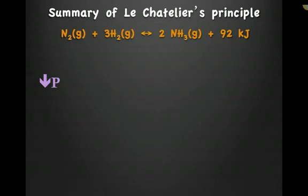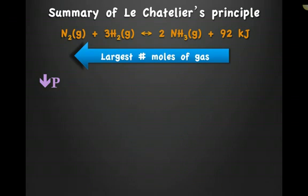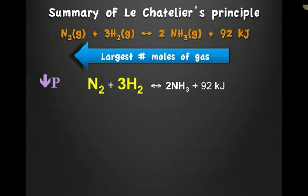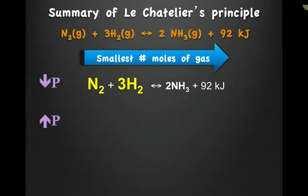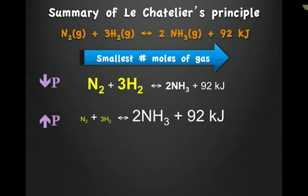In this next example, let's look at what happens when I decrease the pressure. Remember, a decrease in pressure favors the formation of the largest number of moles of gas. That means this equilibrium is going to shift to the left — there are four moles of gas on the left and only two moles of gas on the right. This equilibrium shifts to the left, increasing the amount of nitrogen and hydrogen. What happens if I increase the pressure? When I increase the pressure, I go to the smallest number of moles of gas. This equilibrium has the smallest number of moles of gas on the product side, producing only two moles of ammonia — the equilibrium shifts to the right, meaning ammonia is going to increase and nitrogen and hydrogen are going to decrease.